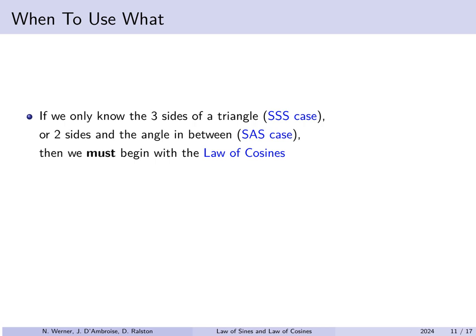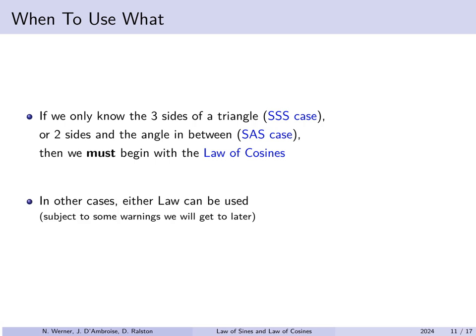How do you know when to use the law of sines versus the law of cosines? If you only know all the sides, or two sides and an angle in between, the law of sines will not help. With three sides, every pair you set against each other using the law of sines will have two unknowns. If you have lots of information about sides and not about angles, go with the law of cosines. Side-side-side, or two sides and the angle between them — side-angle-side — use the law of cosines to start. In some other cases, either law can be used, but there are some warnings.